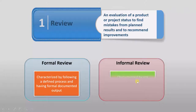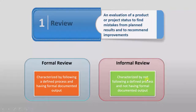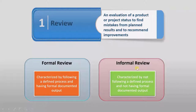Informal review is characterized by not following a defined process and not having formal documented output. For example, it could be a friend who does a review and just tells you by verbal communication what the faults are in a particular document. This is a completely informal review, whereas whatever defects are found in a formal review have to be documented properly.